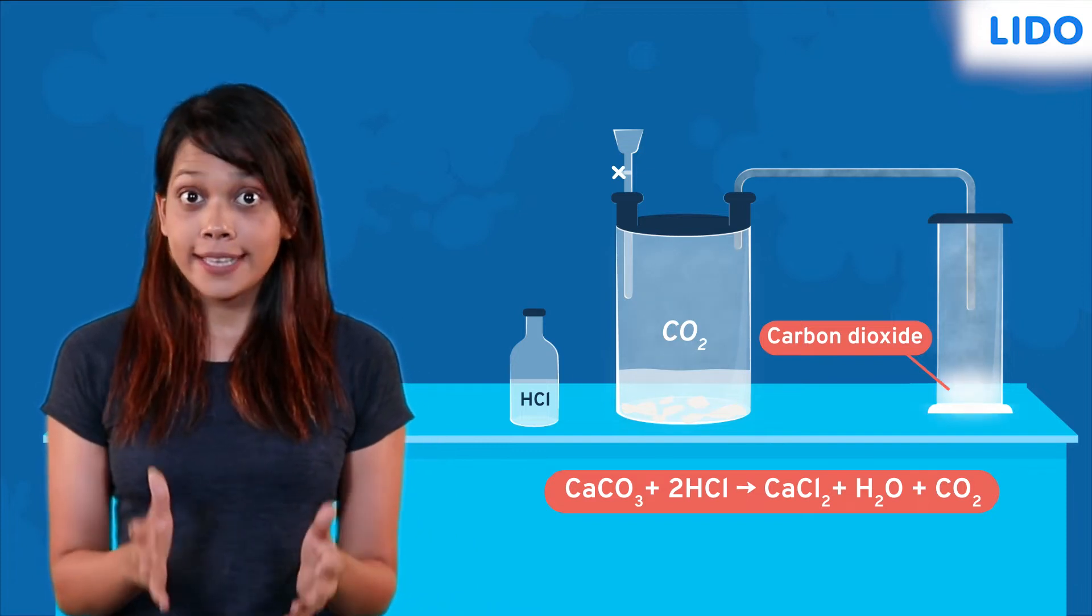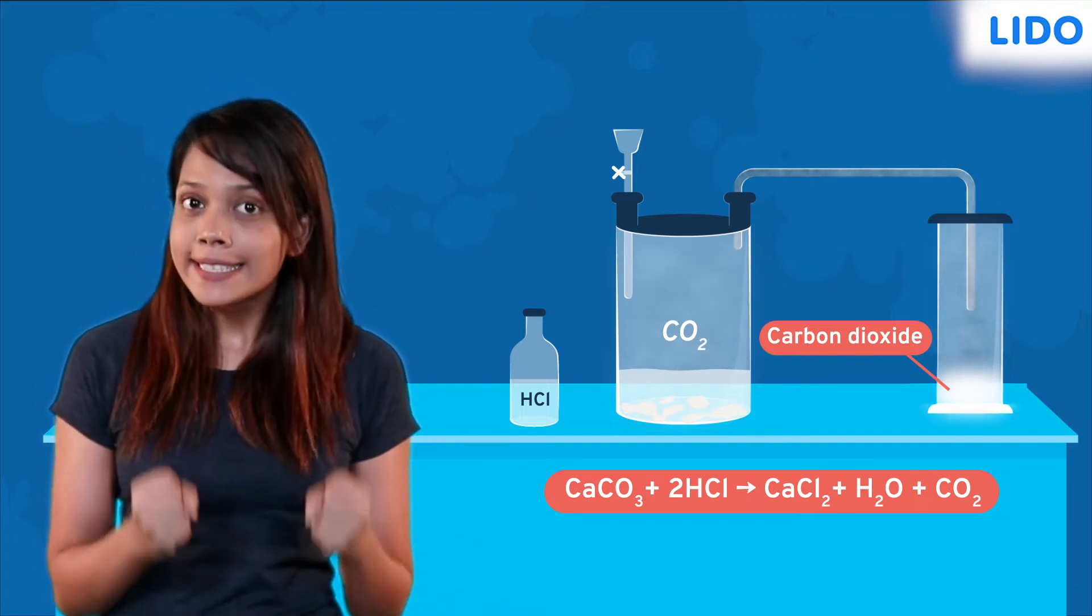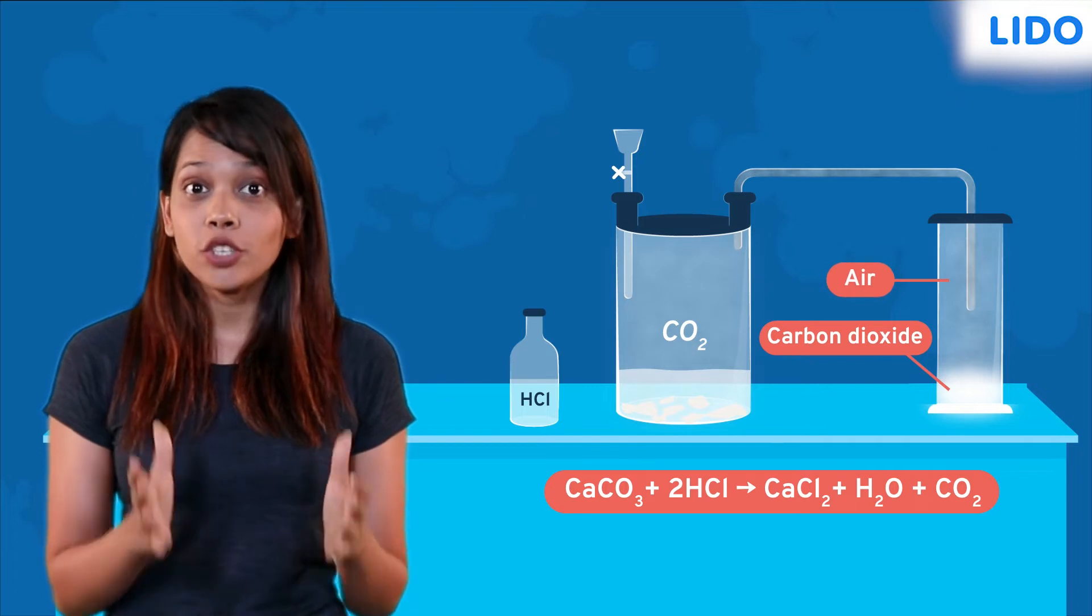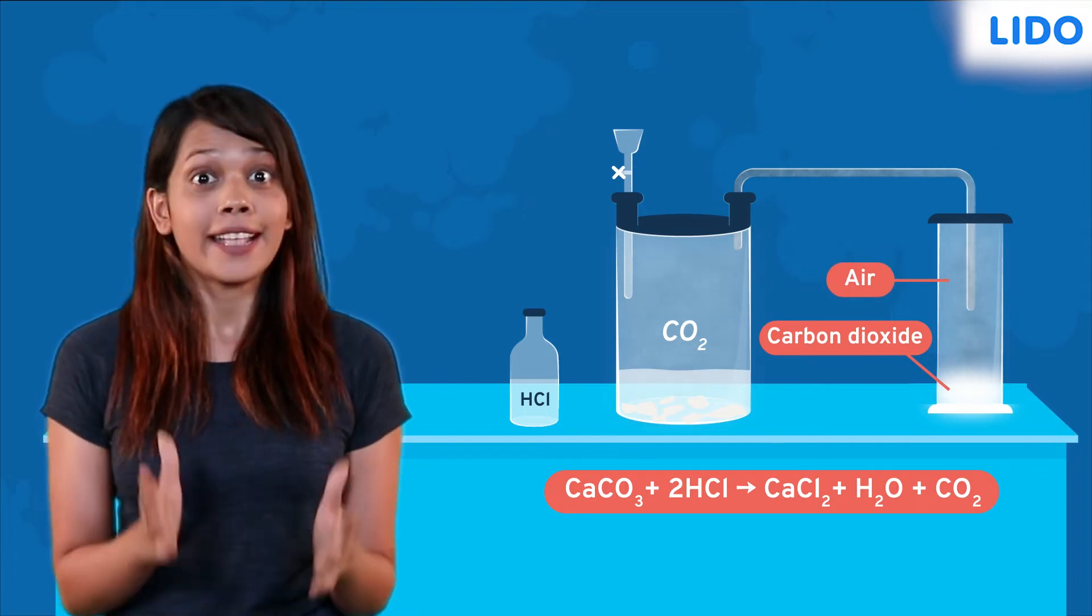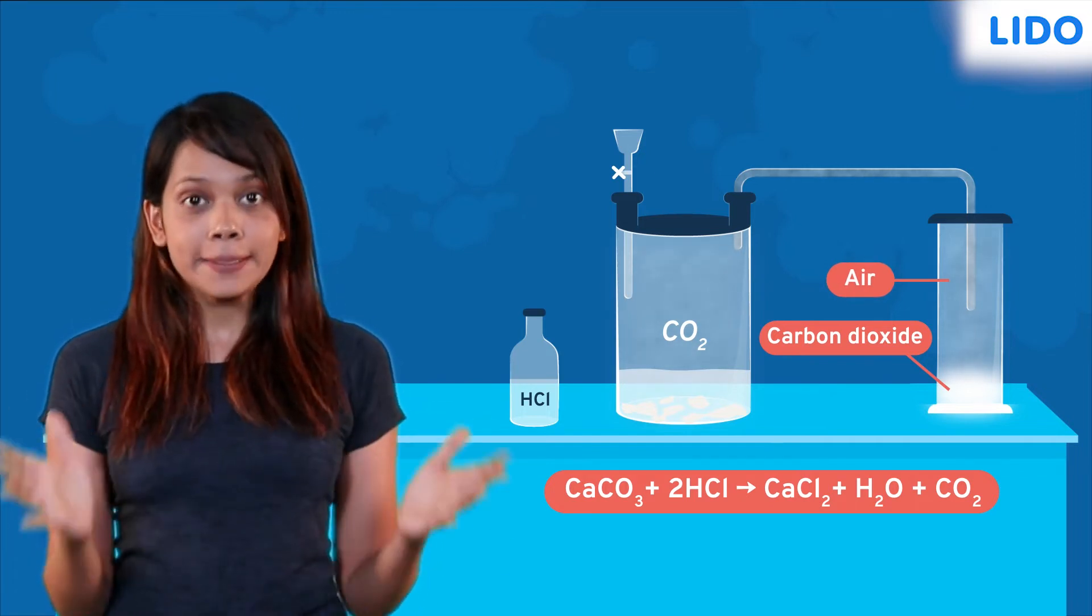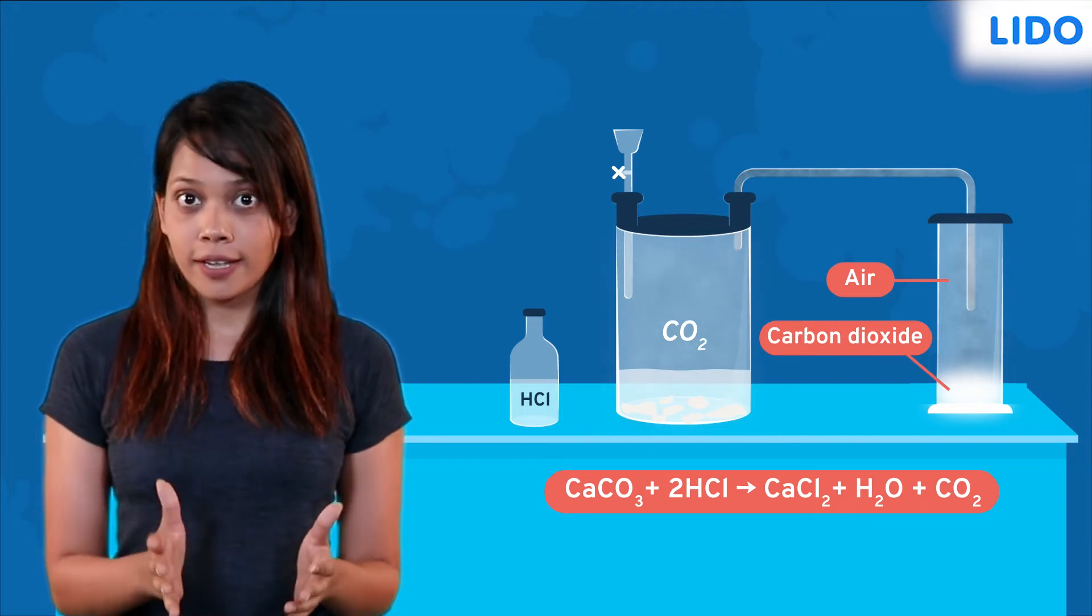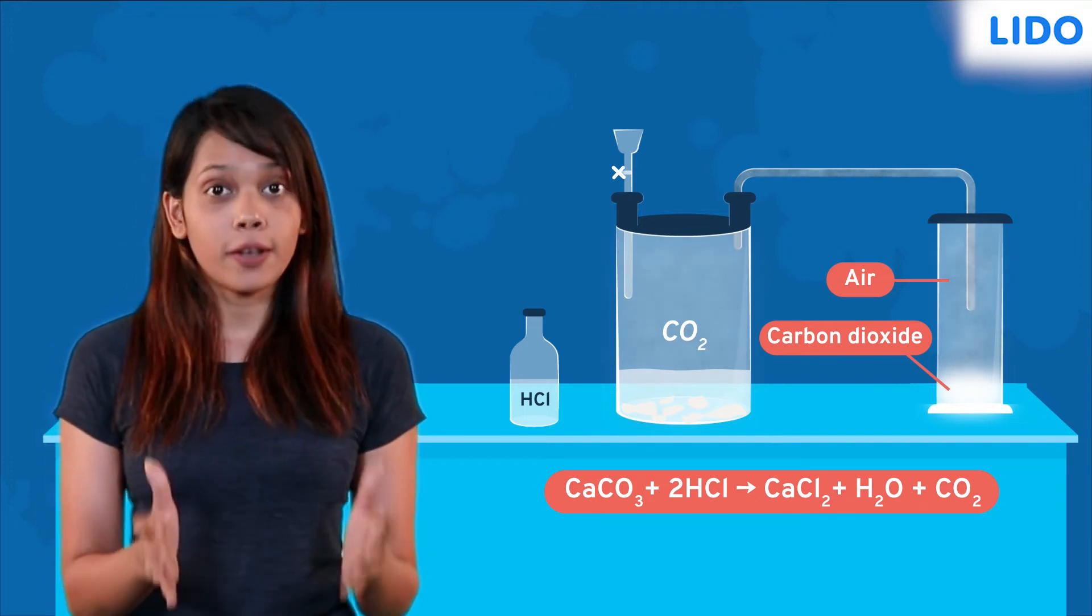Since carbon dioxide is heavier than air, it sinks below and the air in the jar floats above it. Thus, the air is displaced in an upward direction during the collection of carbon dioxide.